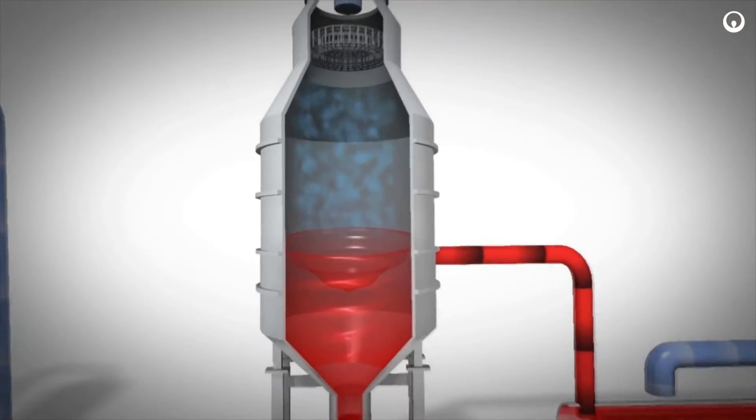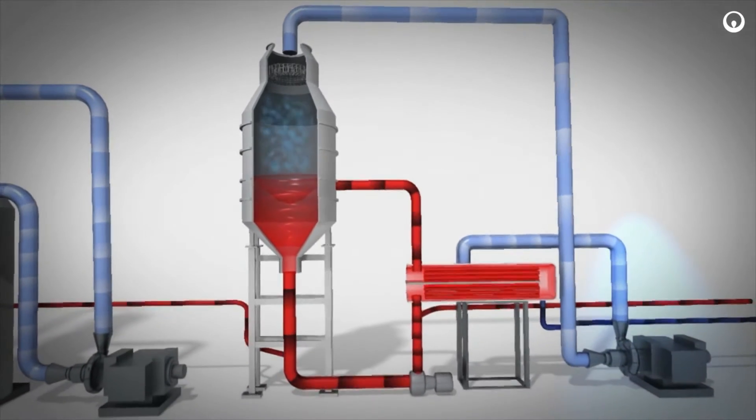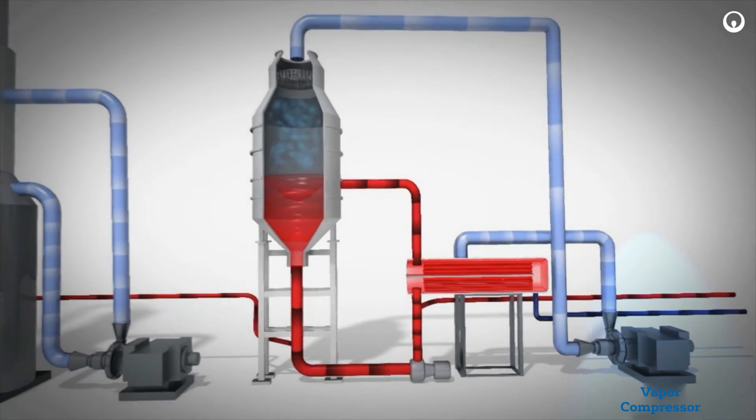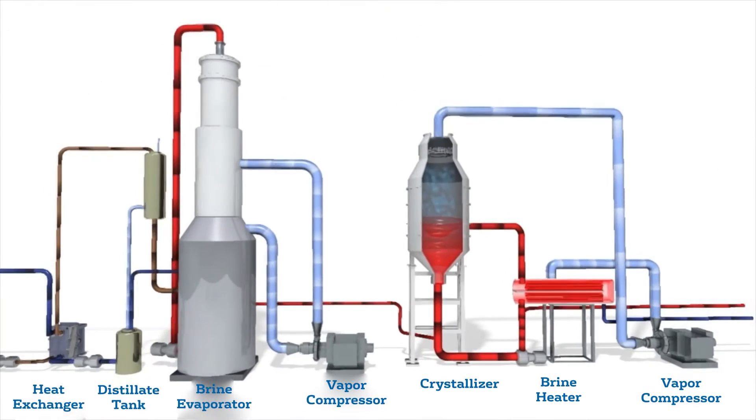The flashed vapor in the vapor body flows through the mist eliminator to the vapor compressor. Vapor from the compressor is routed to the shell side of the shell and tube heater where it condenses and is recovered as condensate. Recovered distillate is available for recycle and reuse.